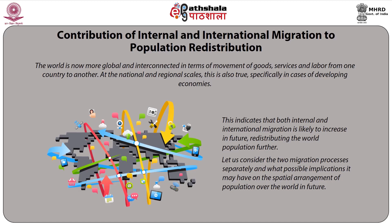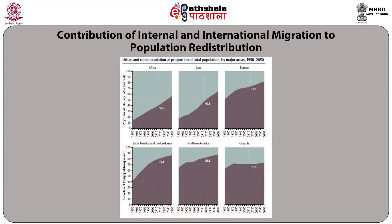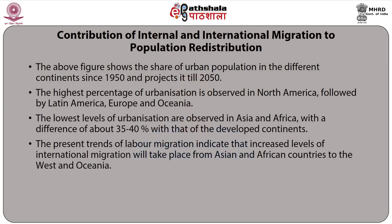The above figure shows the share of urban population in different continents since 1950 and projects it till 2050. The highest percentage of urbanization is observed in North America, followed by Latin America, Europe, and Oceania. The lowest levels of urbanization are observed in Asia and Africa, with a difference of about 35 to 40 percent compared to the developed continents. The present trends of labour migration indicate that increased levels of international migration will take place from Asian and African countries to the West and Oceania.